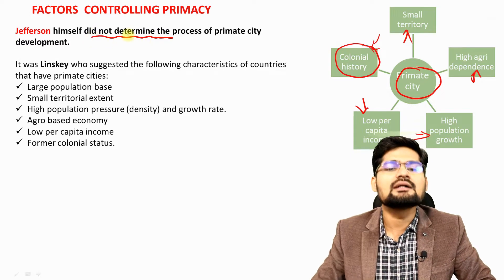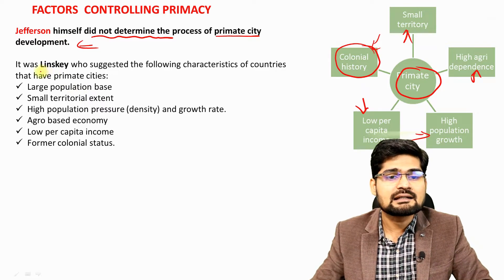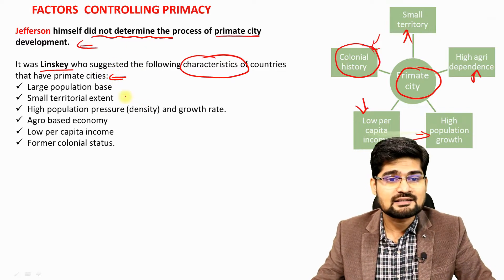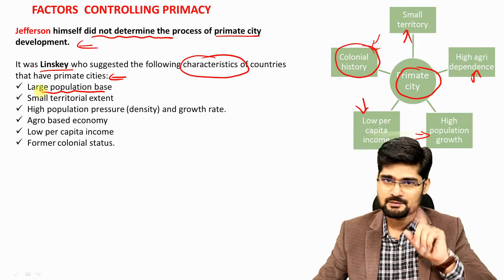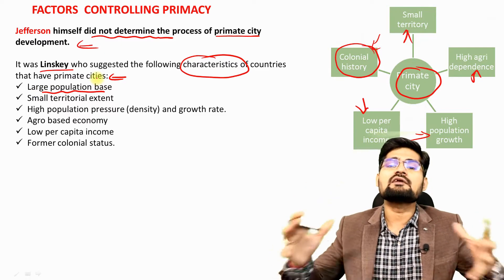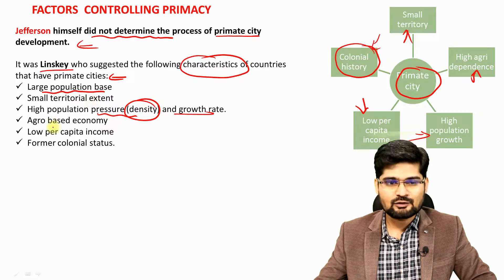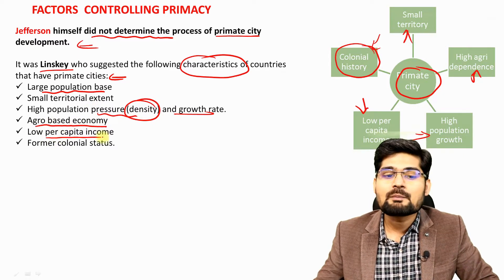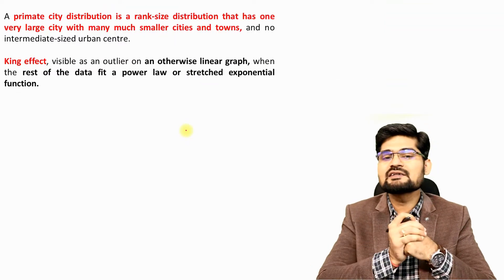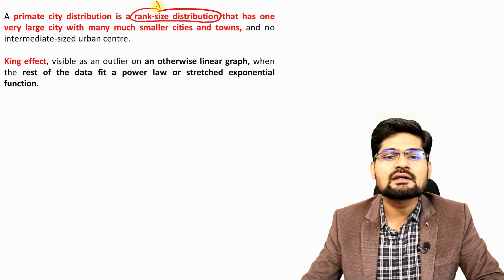Later, Linsky — another scholar — suggested the characteristics of countries having a primate city. These countries tend to have large populations, smaller territorial extent, high population pressure in terms of density and growth rate, an agro-based economy, low per capita income, and colonial status. The resultant is primate city dominance in terms of rank-size distribution.